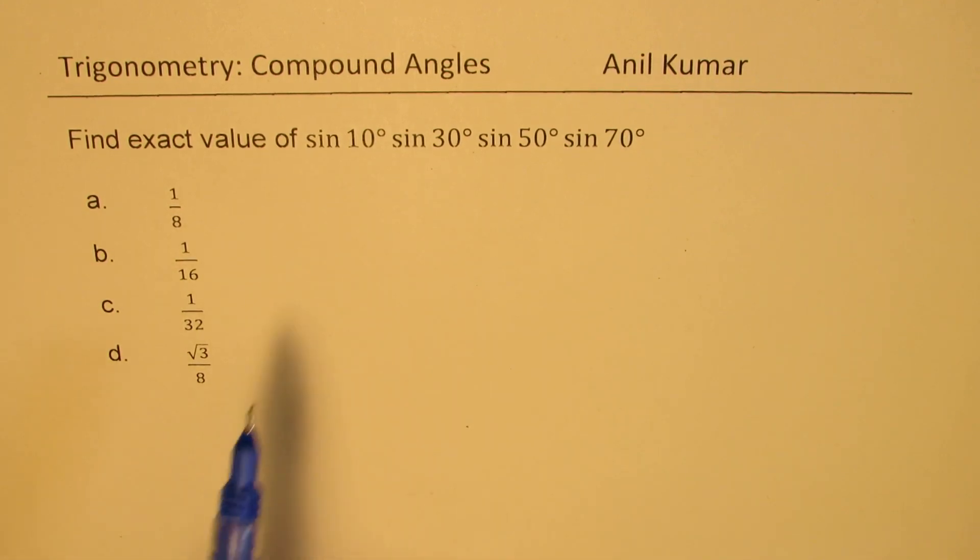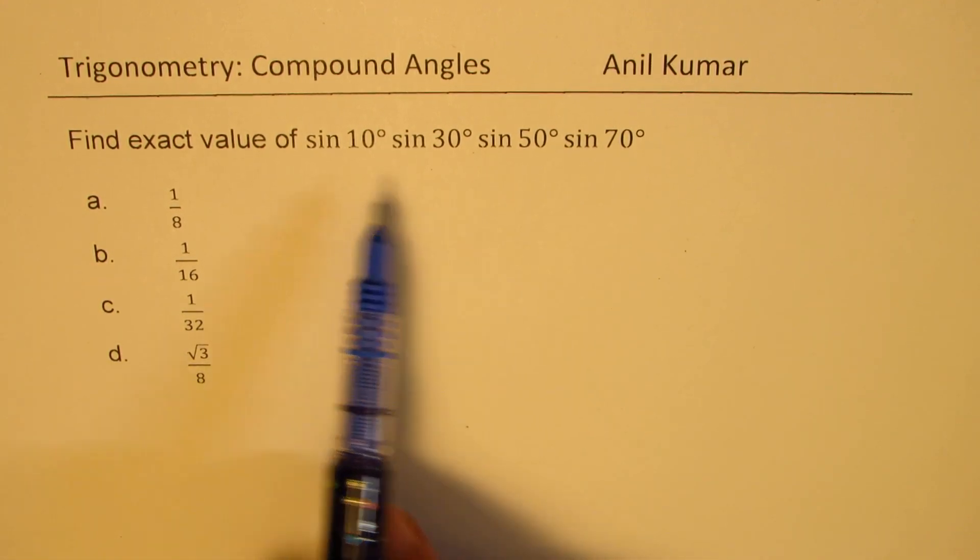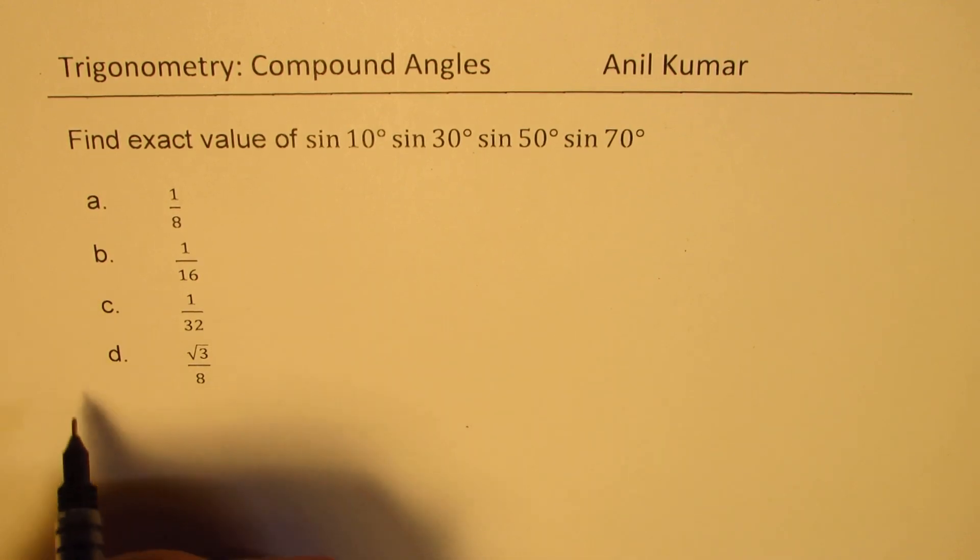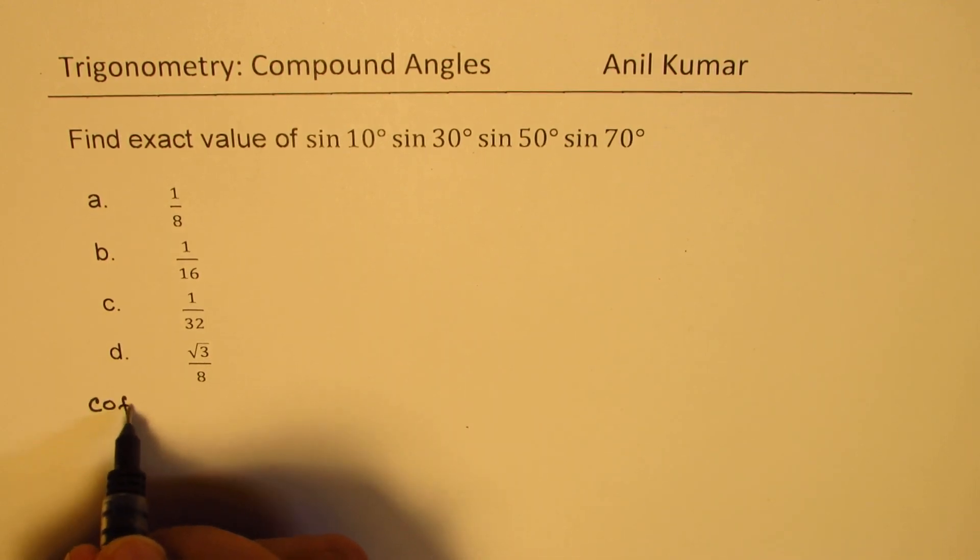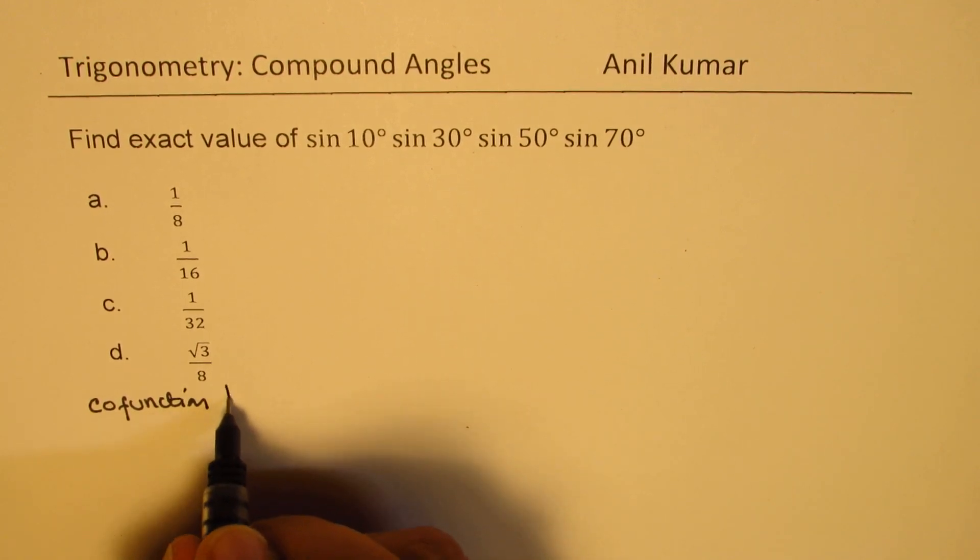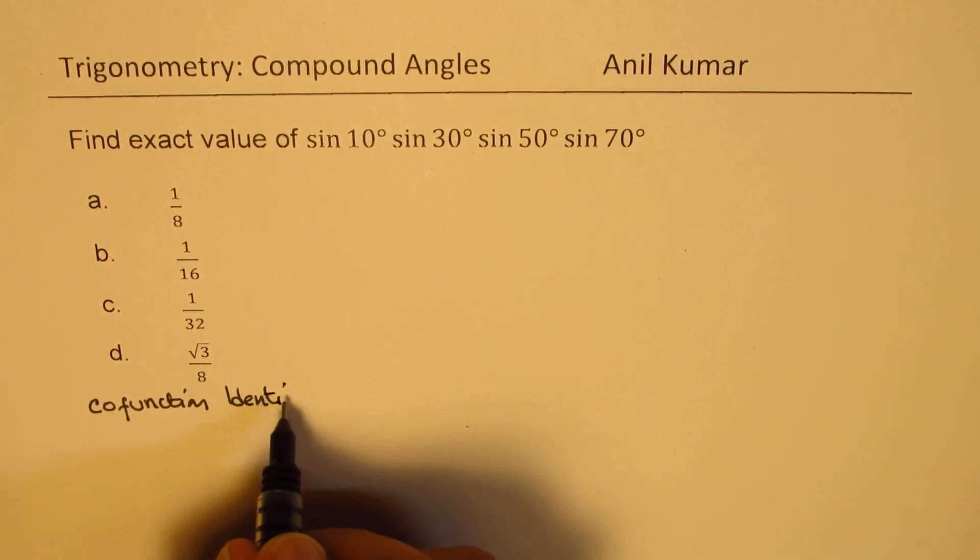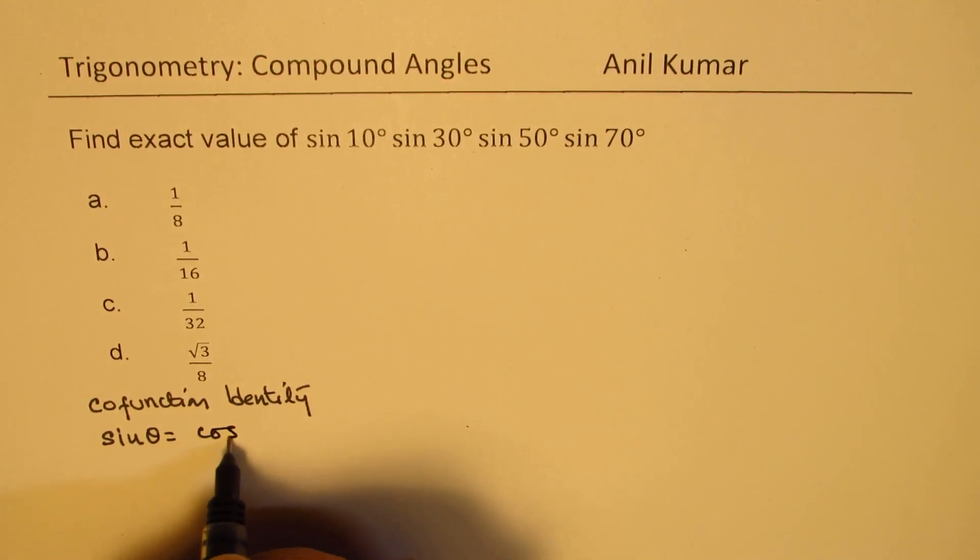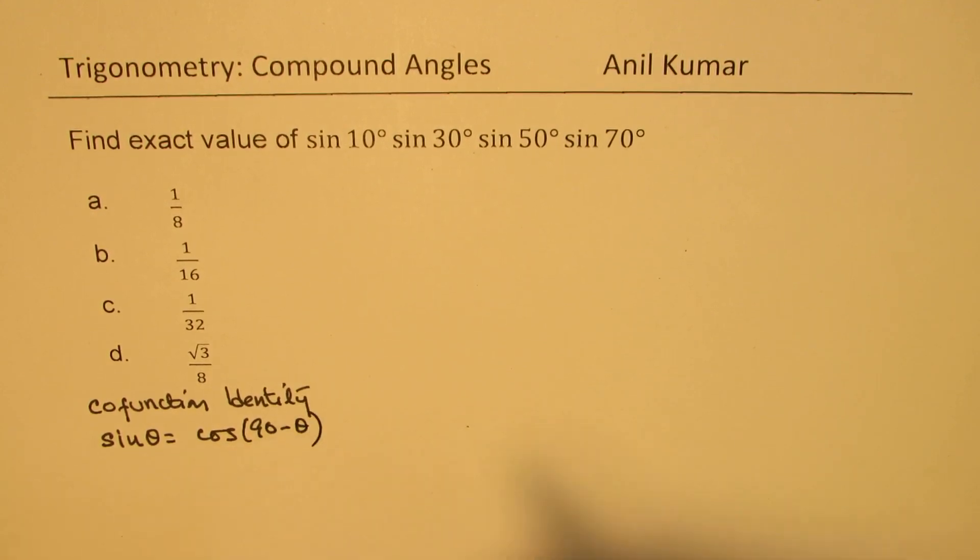Now, to solve such questions, we use a couple of identities. Let me share them with you. One of the important identities is the co-function identity. Which is that sine theta can be written as cos of 90 minus theta. Same is also true for cos theta. You can also write cos theta as sine 90 minus theta.